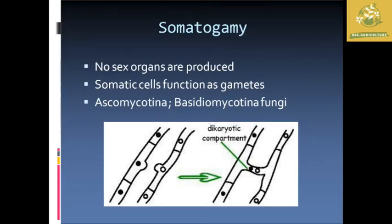Now we are going to see about somatogamy. It is reproduction produced without any sex organs. The somatic cells function as gametes — the mycelial body acts as a gamete. This is common in Ascomycotina as well as Basidiomycotina fungi. There are no specialized sex organs in these fungi. Somatic cells merge with one another due to what is called the dikaryotic compartment. This is how cells are exchanged in these fungi.